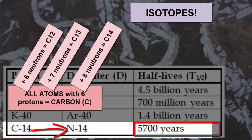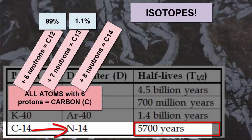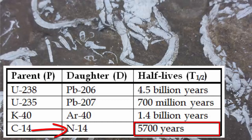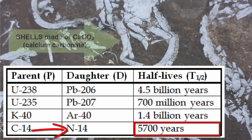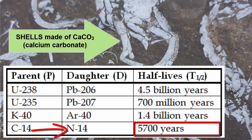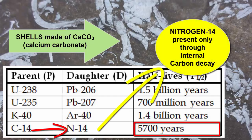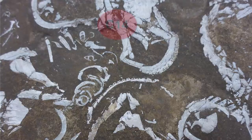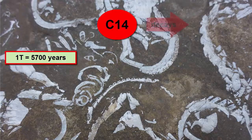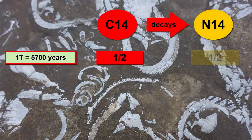Any naturally occurring substance with carbon in it will have about 99% carbon-12, 1.1% carbon-13, and some trace amounts of the radioactive carbon-14 isotopes. What makes carbon-14 and nitrogen-14 a very good isotope pair is that most substances that contain carbon in a structure, such as shells made of calcium carbonate, do not also have nitrogen in them. So any nitrogen-14 we see in the material will have come from the decay process. For carbon-14, every 5,700 years, half of the original carbon-14 has decayed to nitrogen-14.